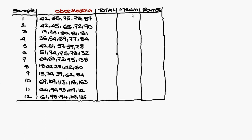We require the Mean and Range for each sample. The mean of the first sample: add all values to get 347, then 347 divided by 5 equals 69.4. For the Range, it is the highest value minus the lowest value: 87 minus 42 equals 45.